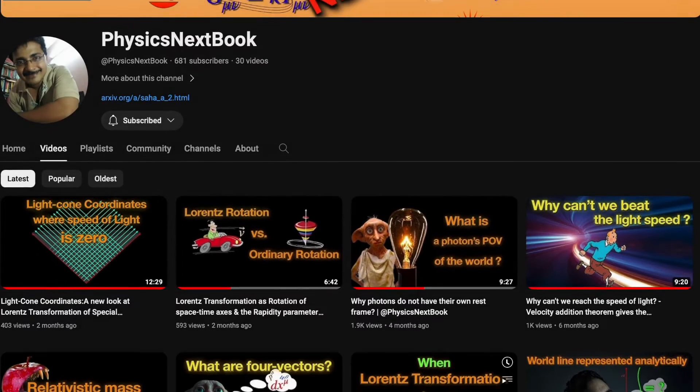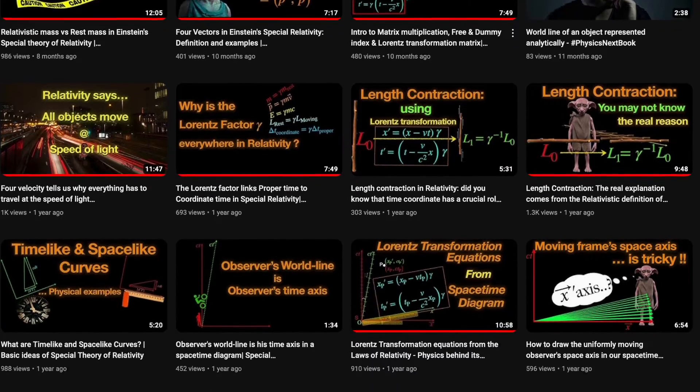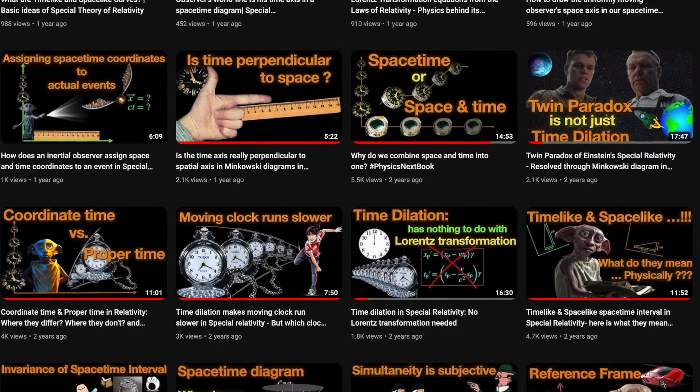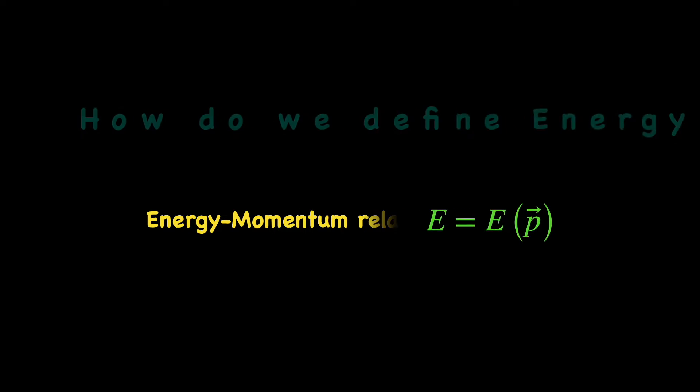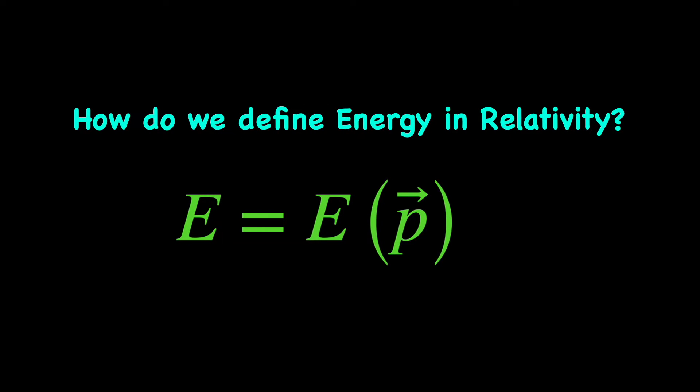In this channel we have covered most of the basic concepts of special relativity from scratch. But we have not yet talked about the energy momentum relation for a relativistic particle, because to get there first we need to define the energy of a relativistic particle.